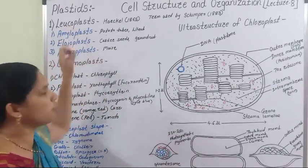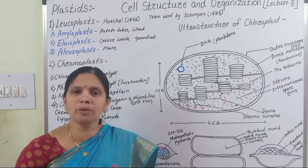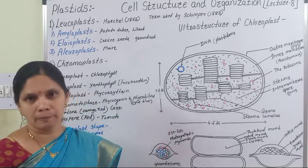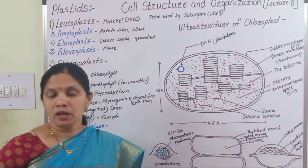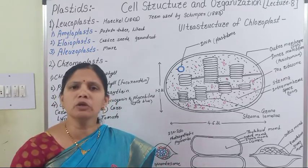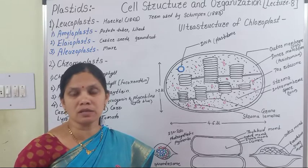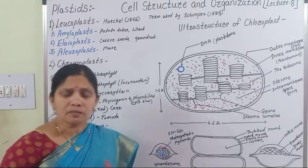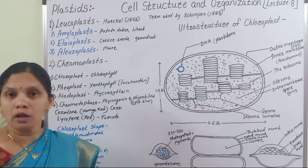Leucoplasts are plastids which are colorless — there is no pigment in them. These Leucoplasts perform the function of storage of food material. They are present in plant parts which do not come in direct contact with sunlight, such as roots, seeds, and underground stems like rhizomes and tubers.